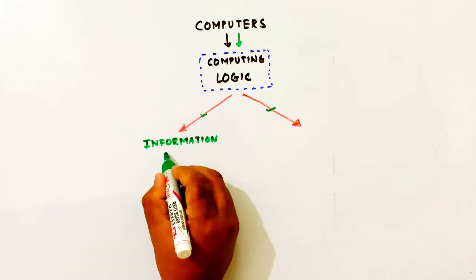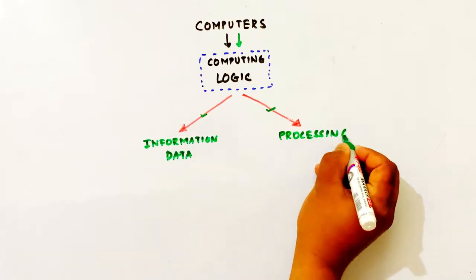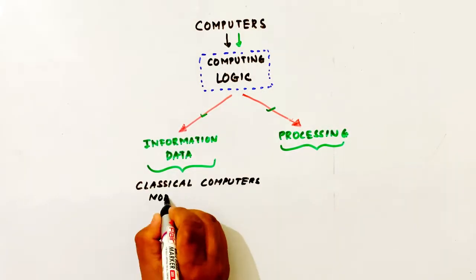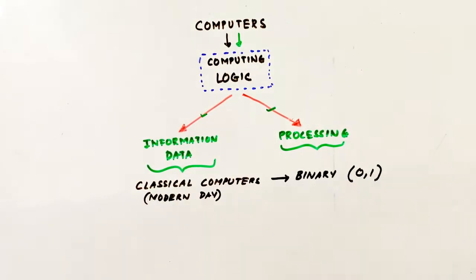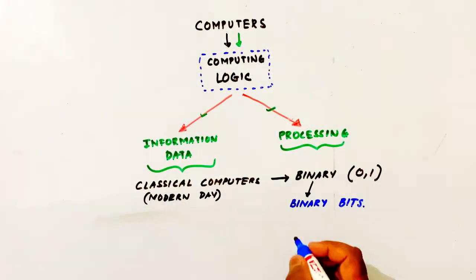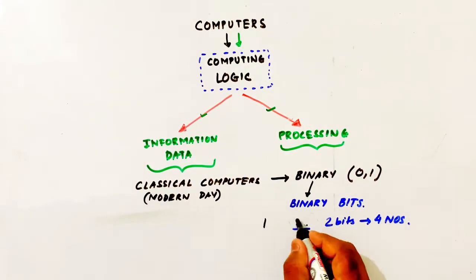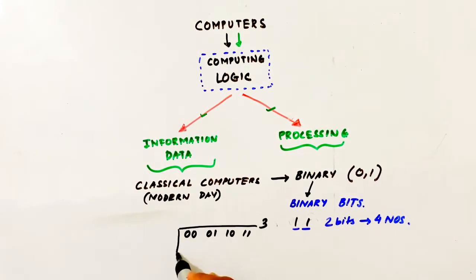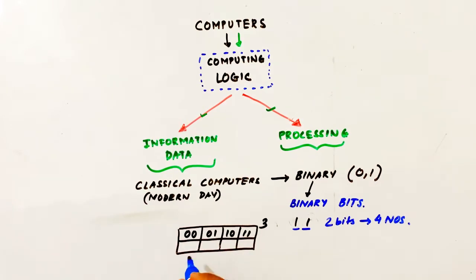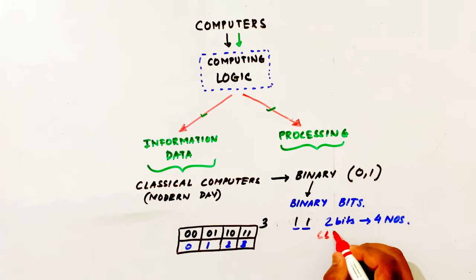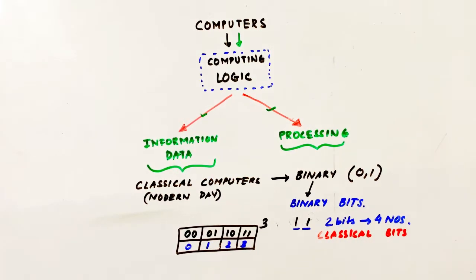This is information, data, processing. This data is processed in our logic. In our classical computer — the modern day computer — it uses a binary system. Binary means 0 and 1. When we convert data, we have binary bits and then processing. In short, n data bits can represent 2 to the power n information — 2 to the power n states.